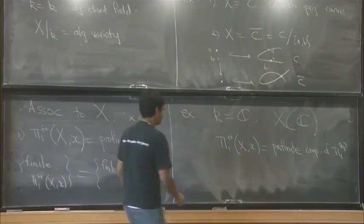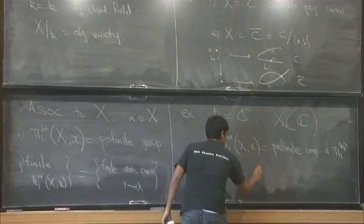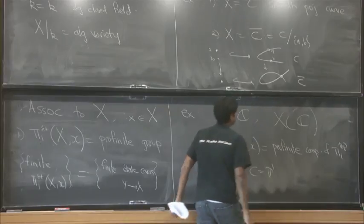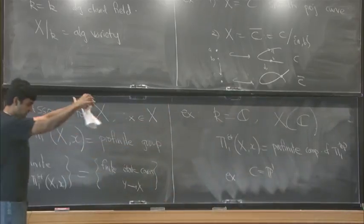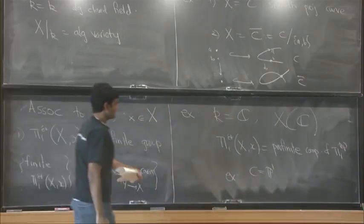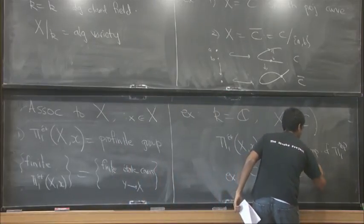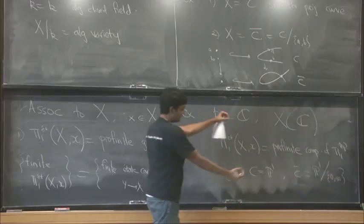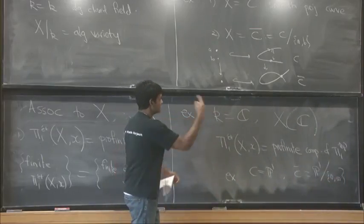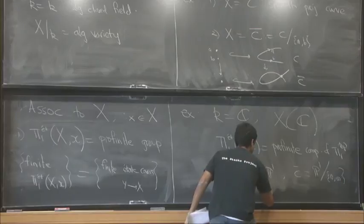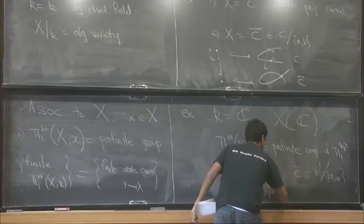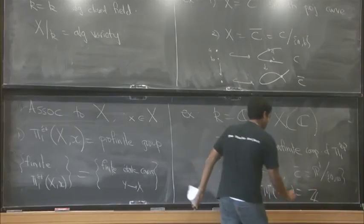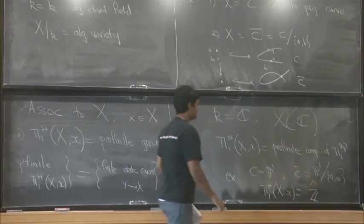So I'll write that as π_1 top. And so an example within the example, if in this notation I take C to be P^1. So it's a sphere, it has no topological fundamental group. And so C bar is going to be P^1 with two points identified, say 0 and infinity. So you have a sphere and you pinch two points together, and so you produce one circle. So this group is free on one generator, but it's profinite. So it's ẑ, which is the profinite completion of ℤ.